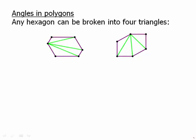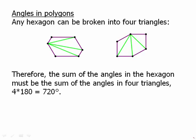Any hexagon can be broken into four triangles. So from any vertex we can draw three different diagonals, divide the shape into four different triangles. The sum of the angles in the hexagon must be the sum of the angles of those four triangles. Four times 180 is 720. That's a good number to know also.